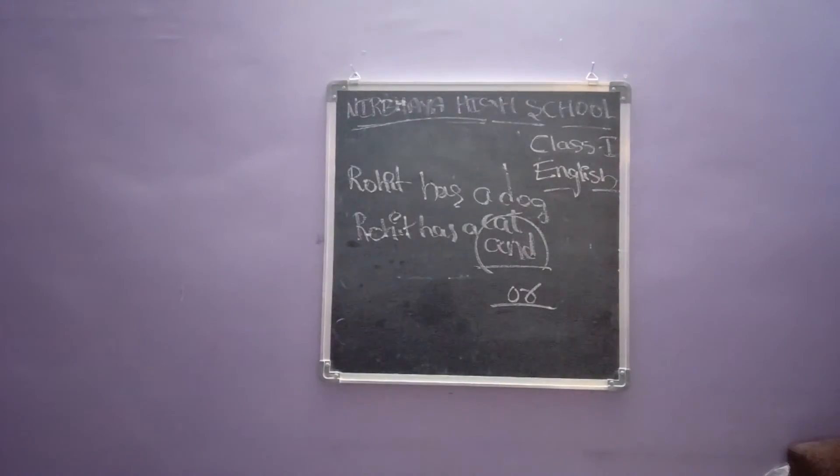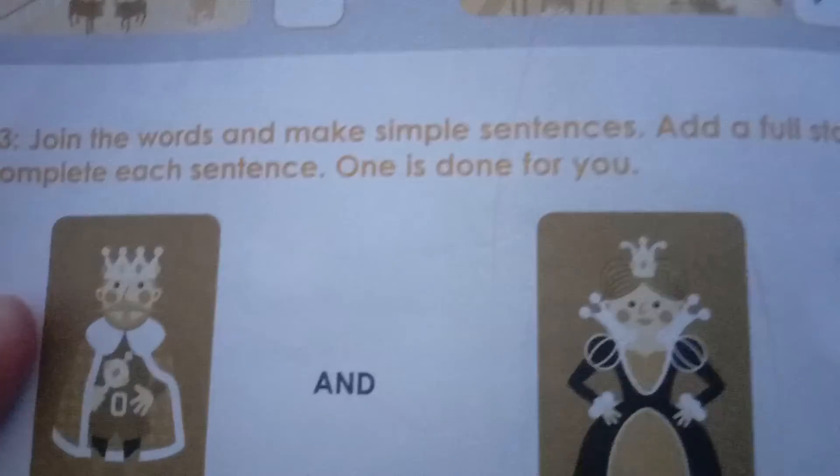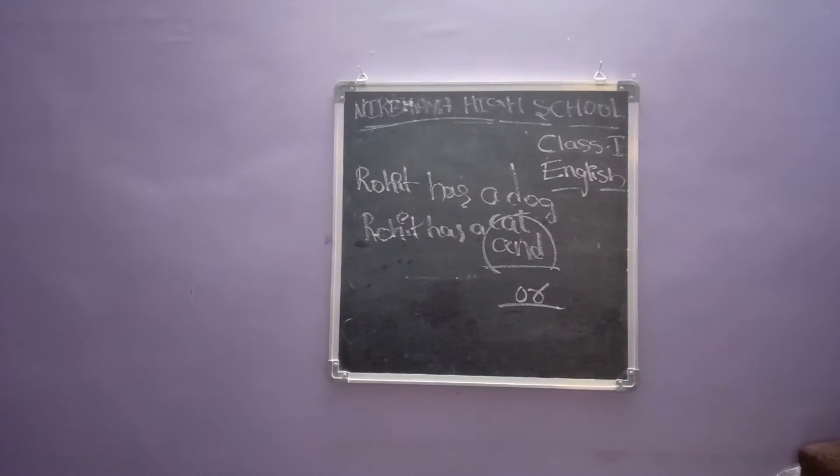Next: tick the picture of the forest or the classroom. Here there are four pictures. In these four pictures, you have to tick forest or classroom — you have the choice. You can tick the forest or you can tick the classroom. Next: join the words and make a simple sentence, and add a full stop after you complete each sentence — one is done for you.